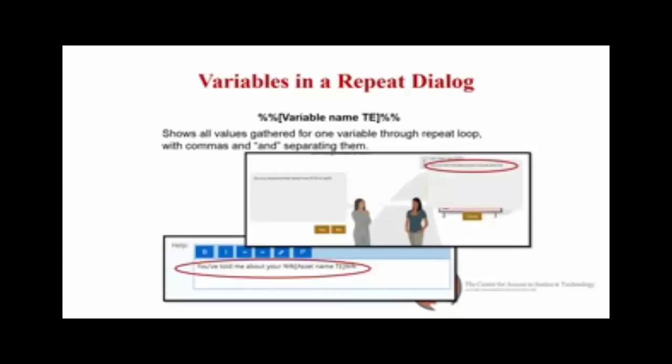In the screenshot, the 'do you have another?' question lets users go back into the loop if yes, or branch out if no. The end user might think, 'which ones have I told you about?' You can remind them in the learn more help section by calling out all values held within 'asset name TE' using the variable macro: percent-percent bracket asset name TE close-bracket percent-percent. This displays to the end user as 'you've told me about your house and car.' A2J Author automatically adds commas and the word 'and' for you.